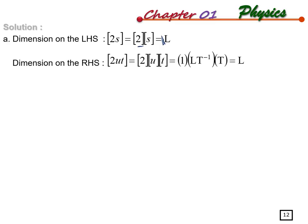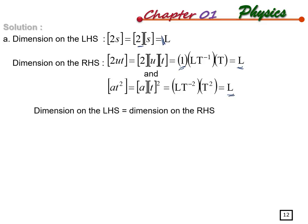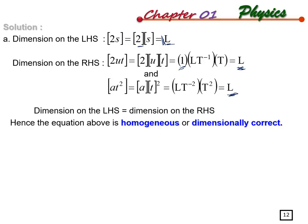For the right-hand side: 2ut - the constant 2 has dimension 1, u is velocity so dimension L over T, multiplied by time T, giving dimension L. For at²: a is L over T squared, multiplied by t squared, also giving dimension L. Left-hand side equals L, right-hand side equals L plus L - both sides match, so the equation is homogeneous and dimensionally correct.